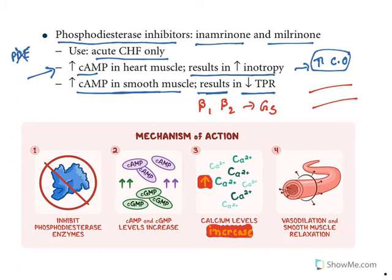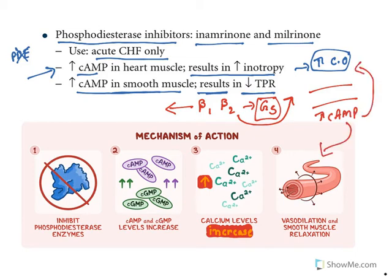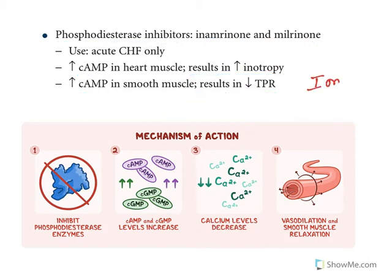Both beta-1 and beta-2 receptors belong to the Gs type of G protein-coupled receptor, but beta-1 increases cardiac contraction while beta-2 causes smooth muscle relaxation and vasodilation. Similarly, phosphodiesterase inhibitors increase inotropy in the heart and cause vasodilation in blood vessels. Because they produce both inotropic and vasodilatory effects, they are known as inodilators.